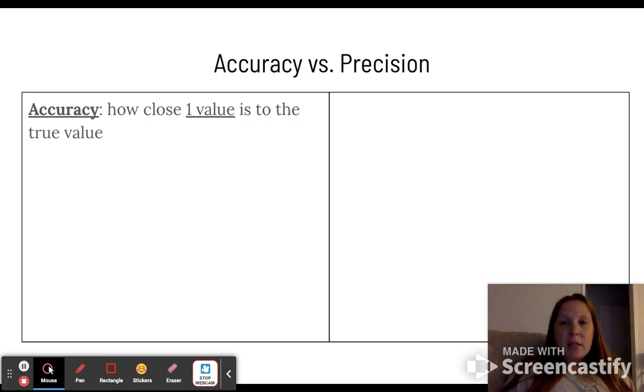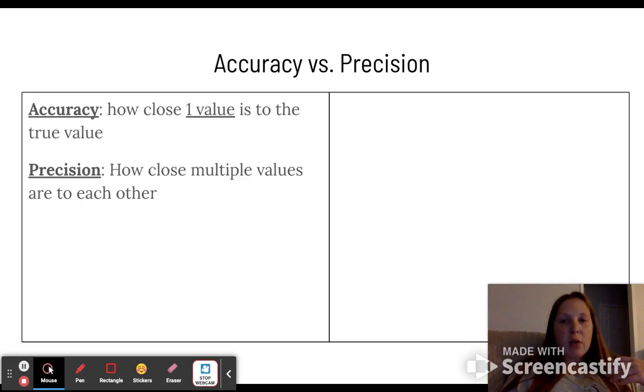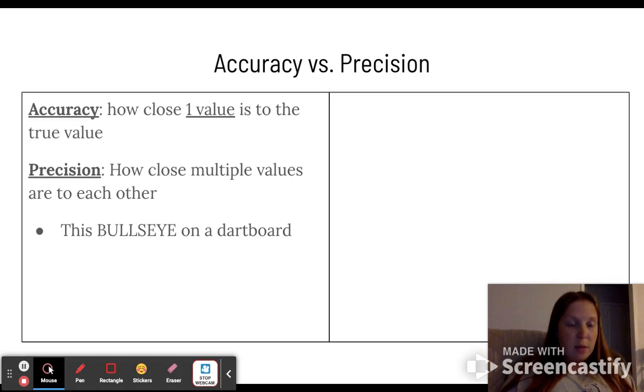Accuracy is defined as how close one value is to the true value or the reference value which would be supplied for you. Precision is how close multiple values are to each other, regardless of where they are compared to the true value.